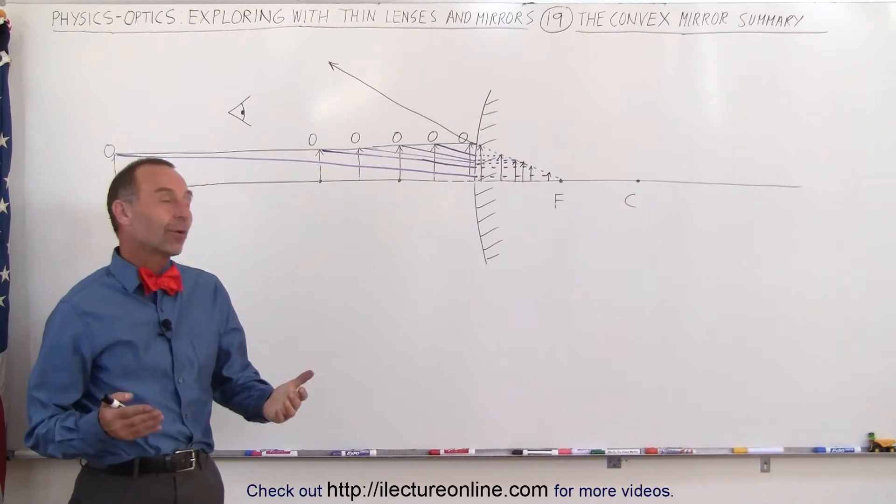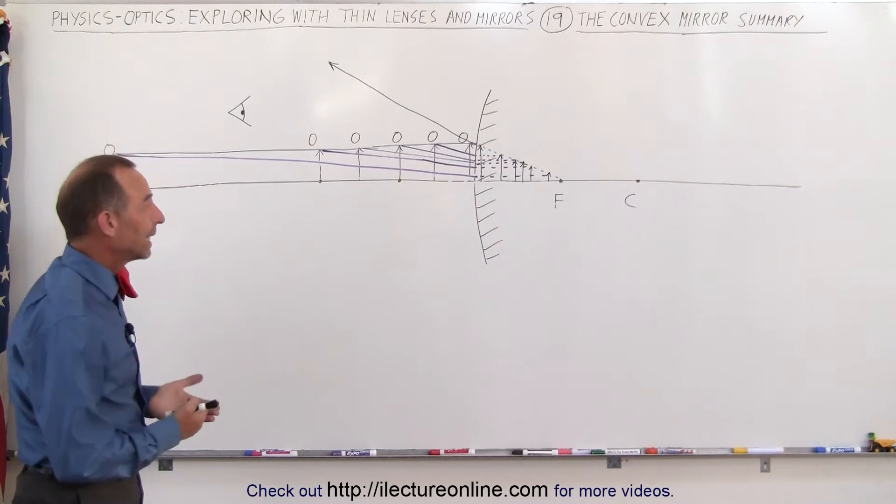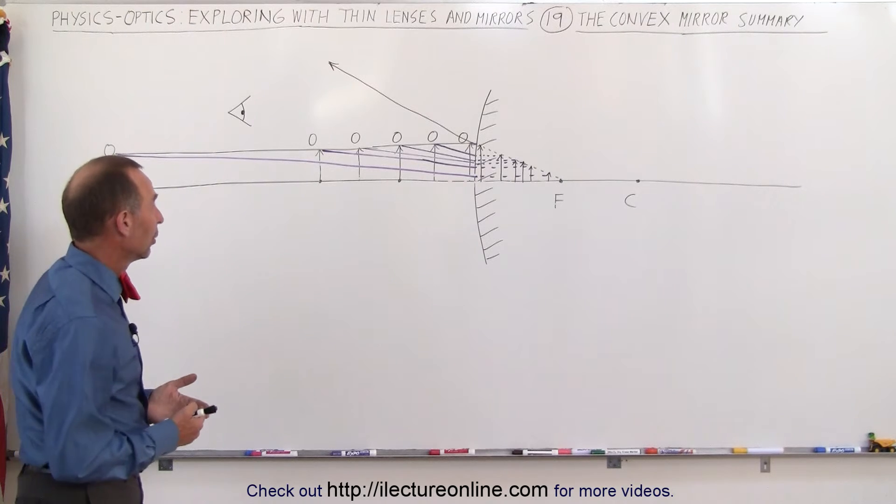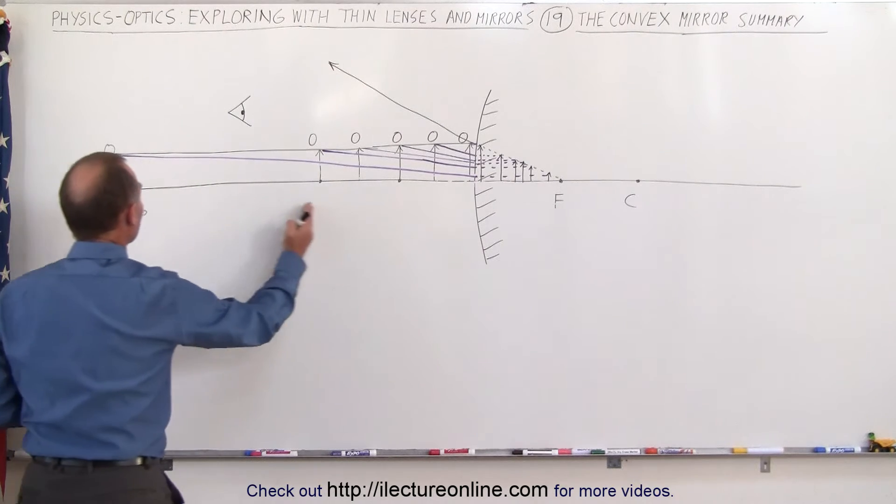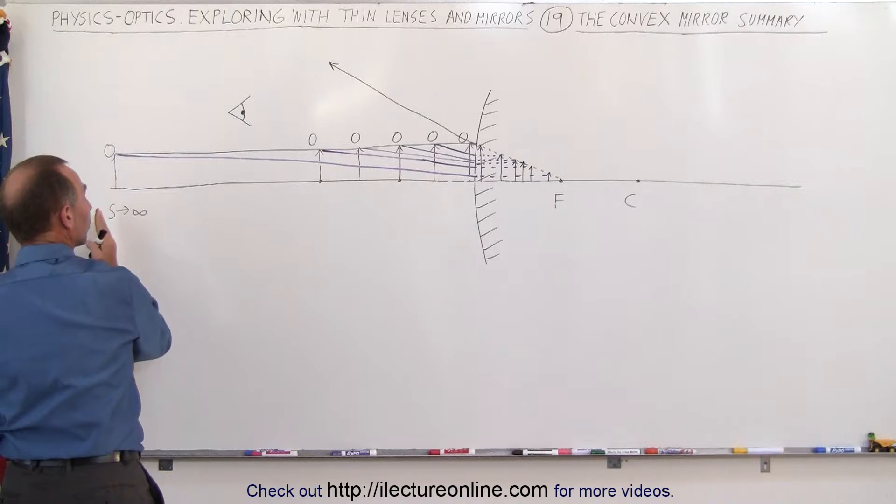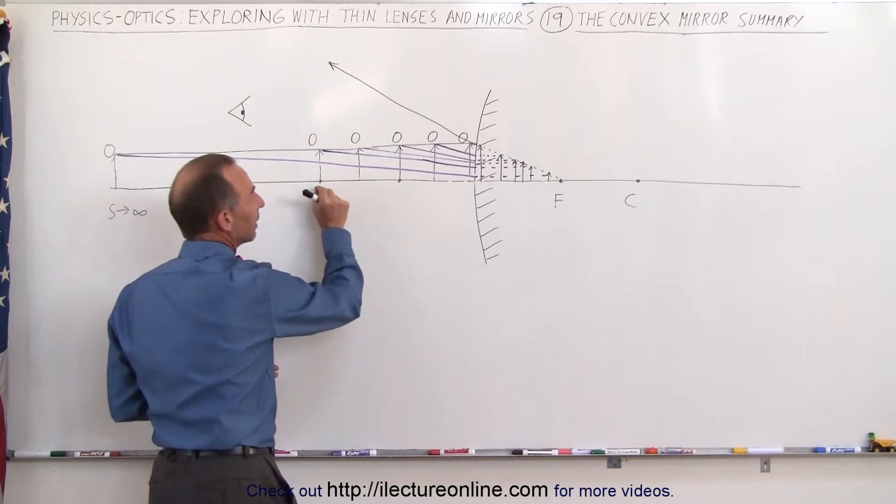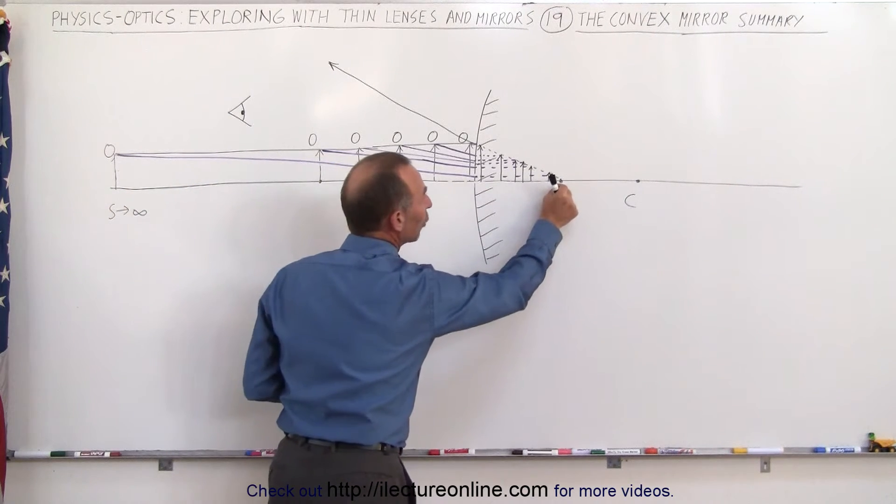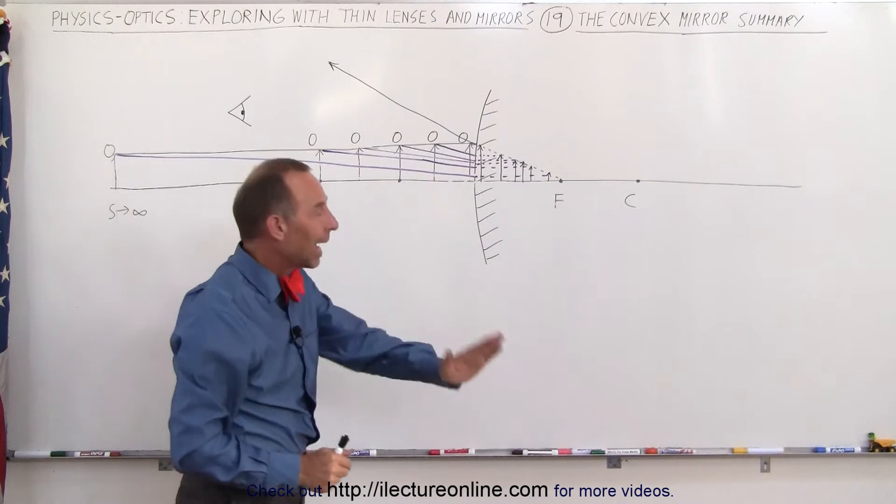Welcome to Electronline. Now let's summarize the images we get with a convex mirror. Notice that as we place the object very far away, out towards infinity, in front of the mirror, we'll get an image forming really close to the focal point behind the lens.